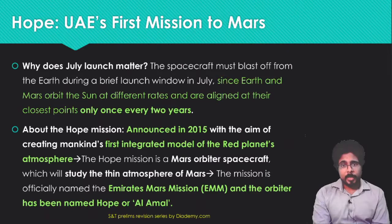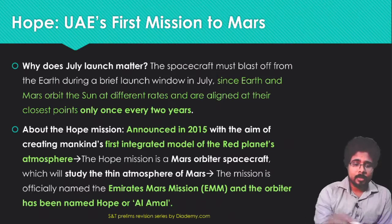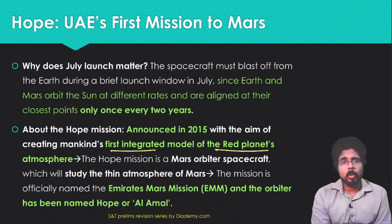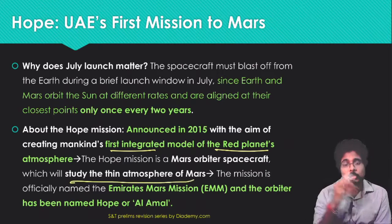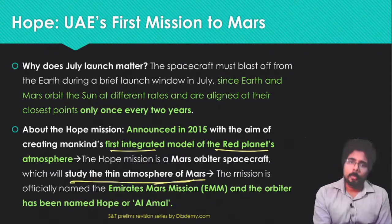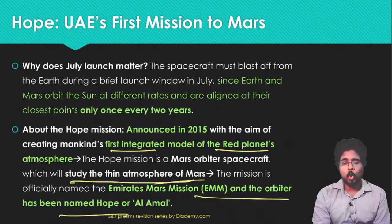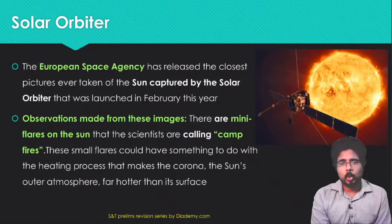The Hope Mission was announced in 2015 by the UAE with the aim of creating mankind's first integrated model of the Red Planet's atmosphere. The main mission is to study the thin atmosphere of Mars. The mission is officially named the Emirates Mars Mission and the orbiter has been named Hope, or Al-Amal.